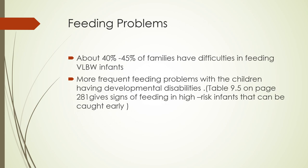Infants who were born preterm or have chronic health problems tend to be more irritable and less able to signal their wants and needs compared to healthy infants. Feeding difficulties are reported in 40–45% of families with very low birth weight infants. Children with developmental disabilities have more frequent feeding problems — as high as 70% — that may or may not be identified in infancy. The table on page 281 gives the signs of feeding problems in high-risk infants, divided into early infancy (birth to 6 months) and late infancy.